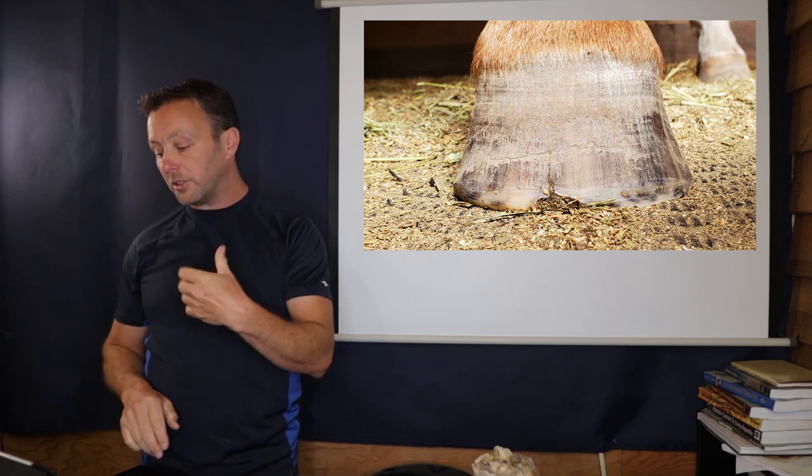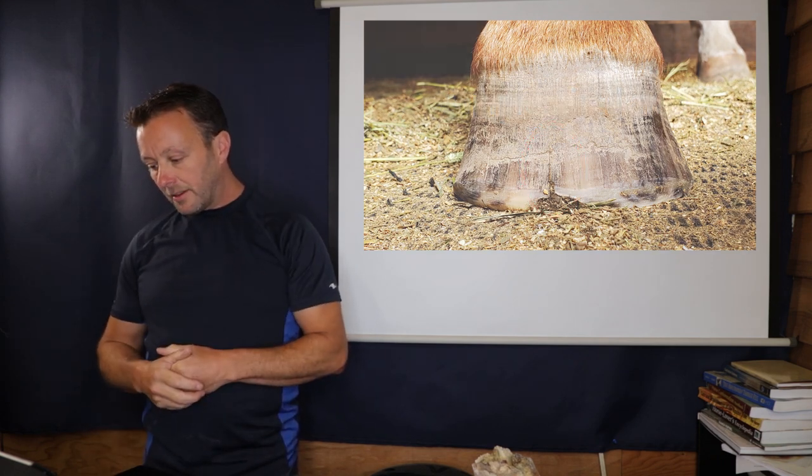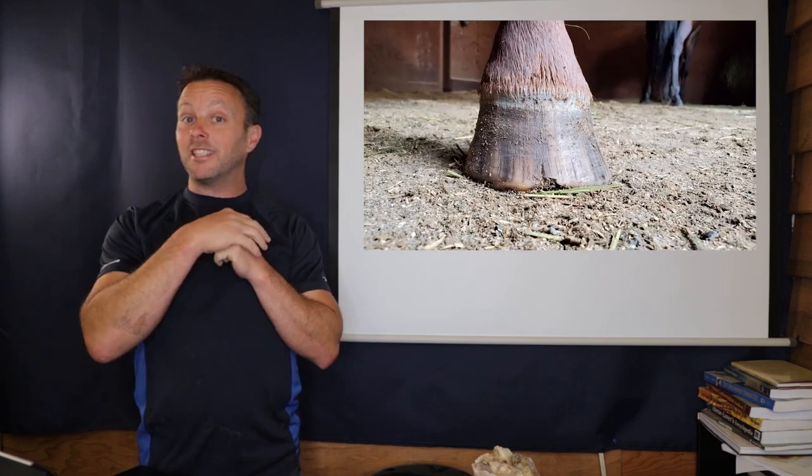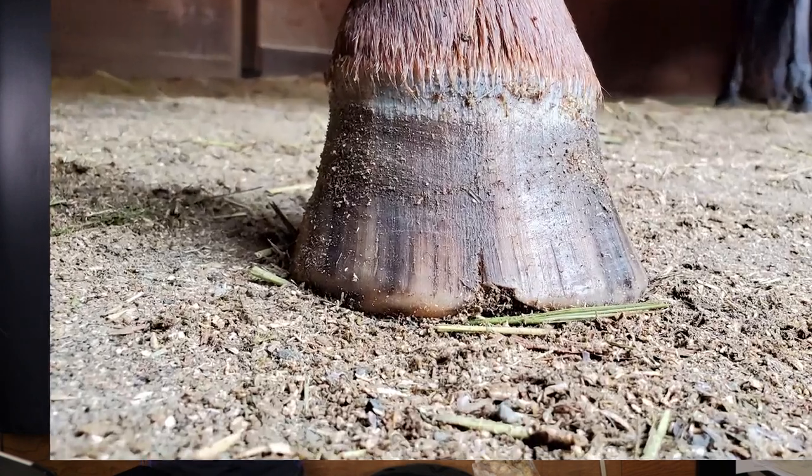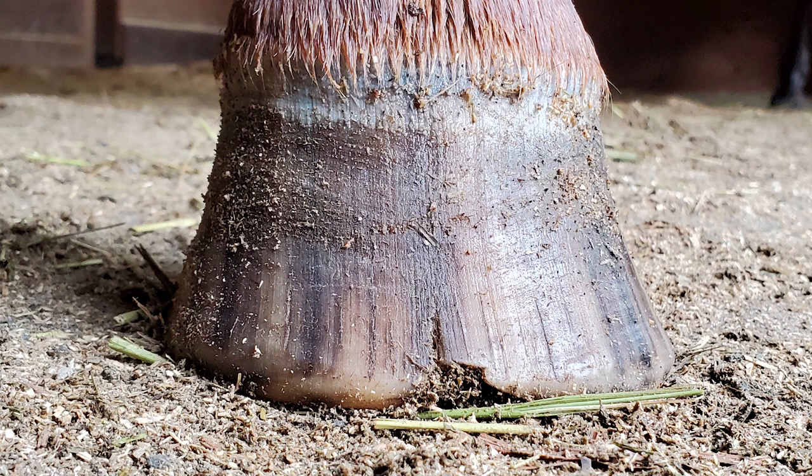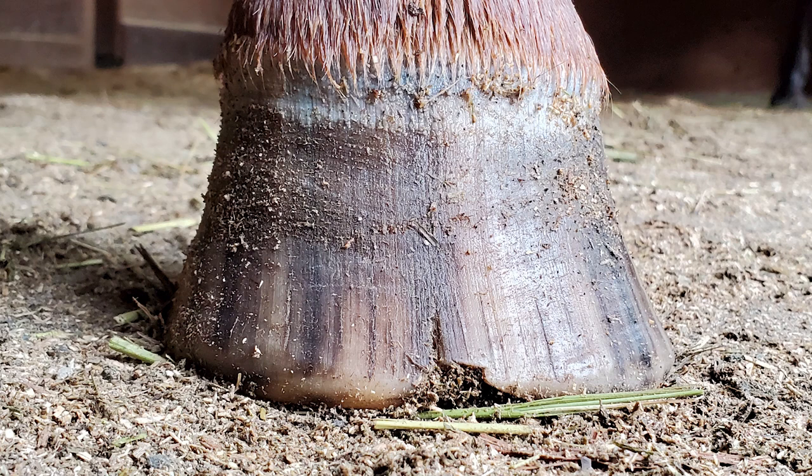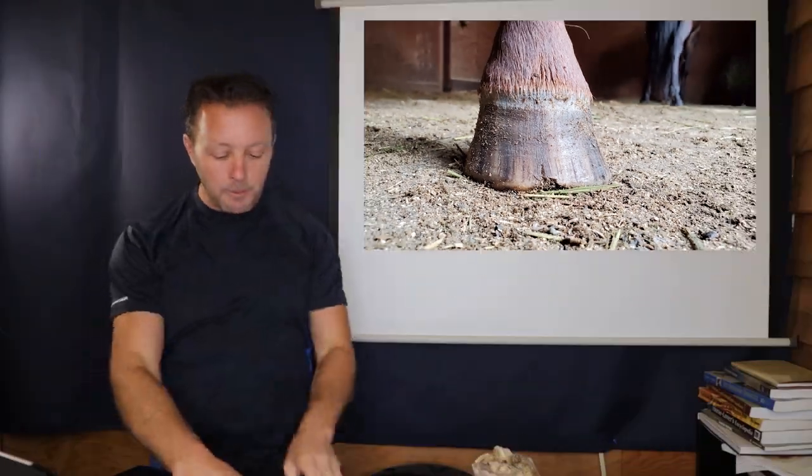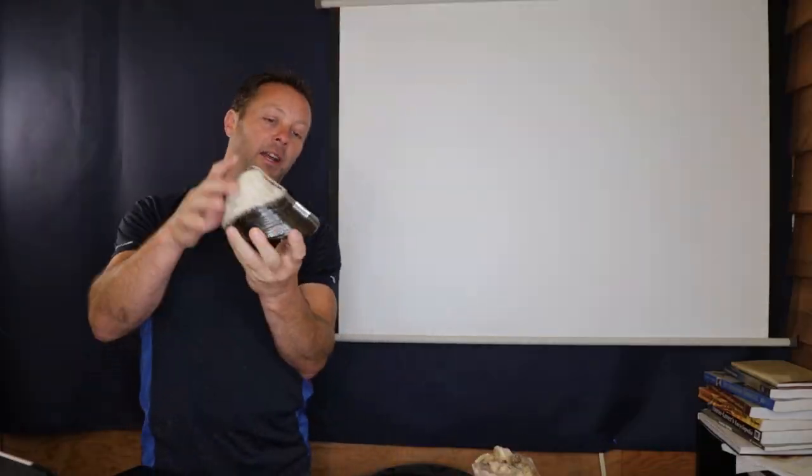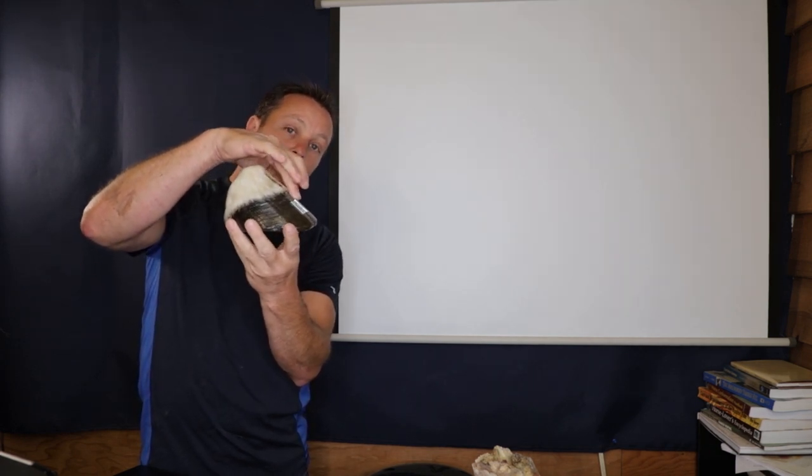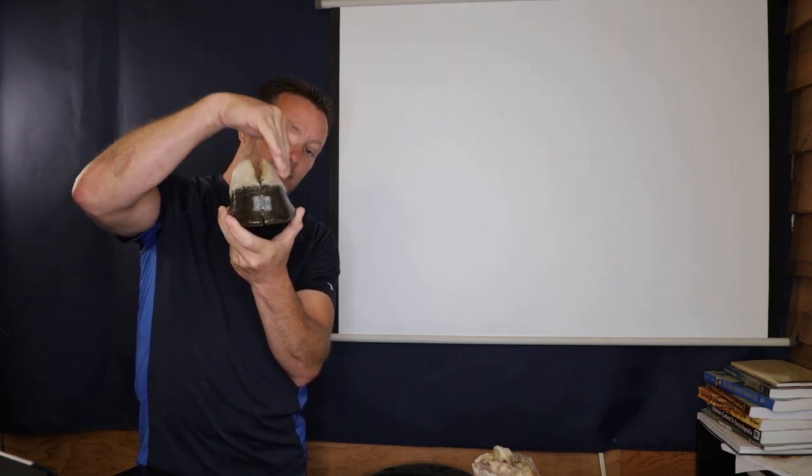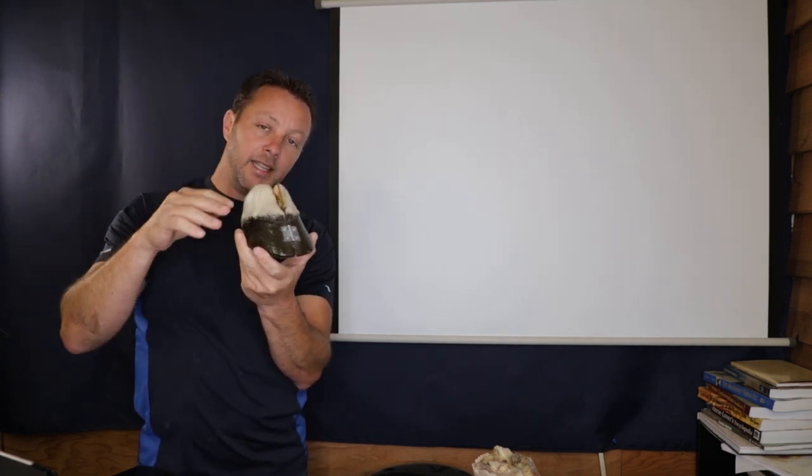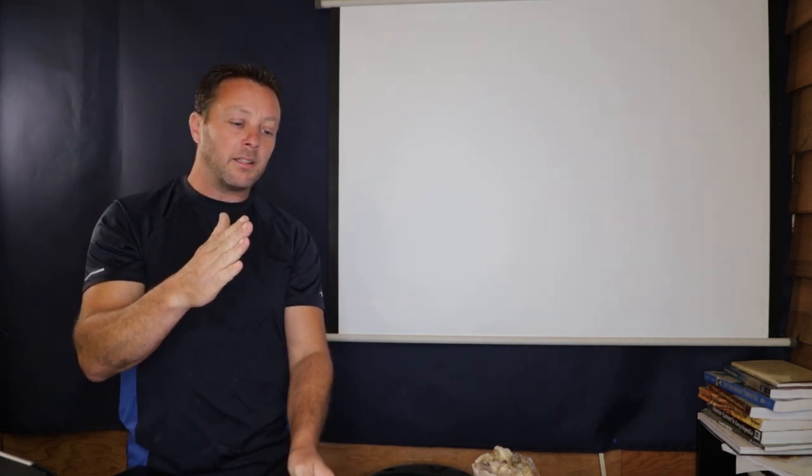So moving on to the next one, which is the next month, we're not seeing a huge amount of difference in what that crack looks like, but what we are seeing is there's continued better growth coming down. And so what happens is, when this hoof wall grows down and not flared out, it grows downwards along the internals of the hoof, it ends up sort of being like velcro.